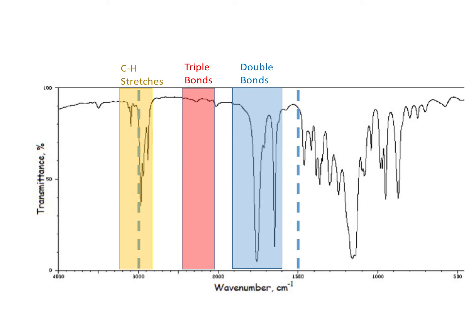When we look at the IR spectrum, I draw a line at 1,500 wavenumbers — everything below that is the fingerprint region, which we ignore. We focus on the diagnostic region above 1,500 wavenumbers. The double bond region is between about 1,600 and 1,800 wavenumbers, the triple bond region is between about 2,100 and 2,500 wavenumbers, and the CH stretches are all right around 3,000 wavenumbers — in addition to looking for alcohols, carboxylic acids, and amines.